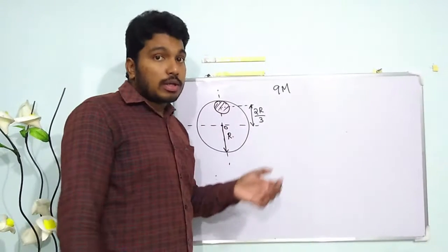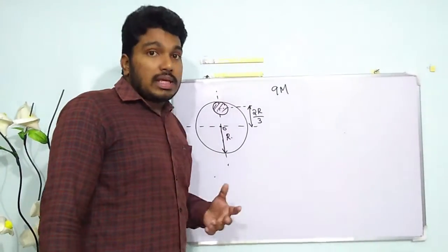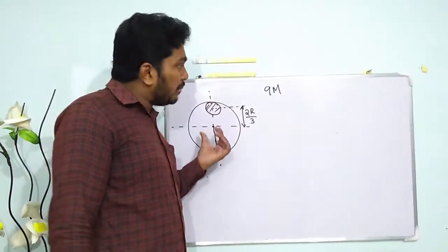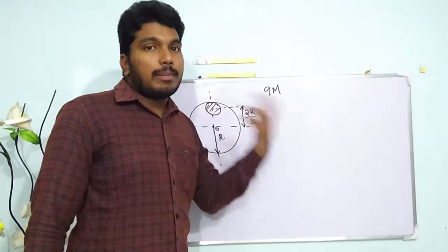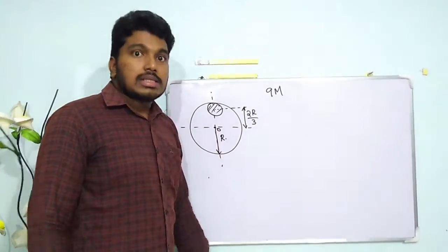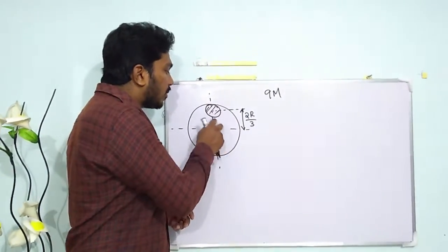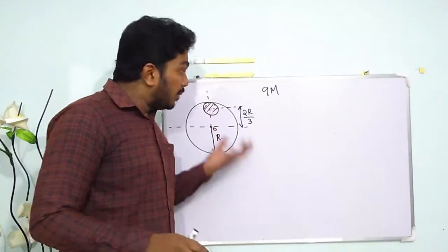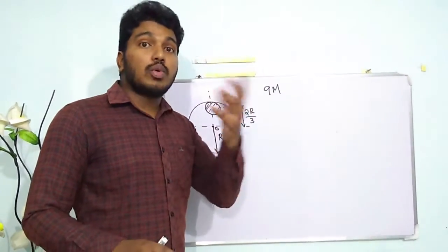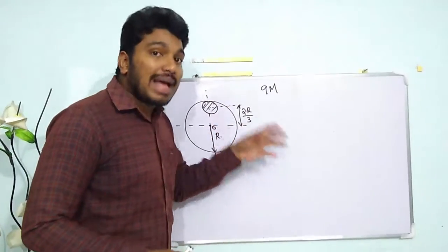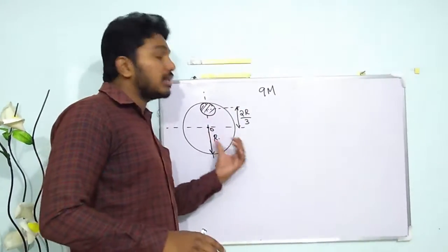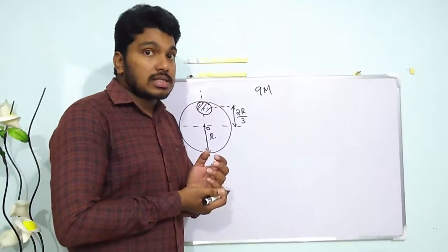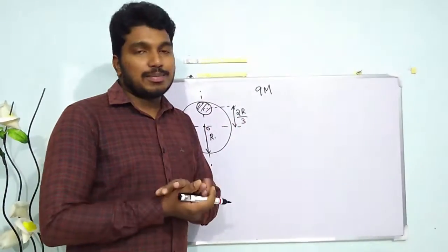This is a very important question. It's not always the same question that is asked, but the same concept may be repeated over and over again. Sometimes the disk we are removing may be from the center, it may be from somewhere else, or sometimes from a sphere. In different manners the question will be replicated, but in whichever way it is asked, the method remains the same.